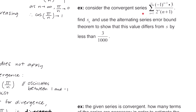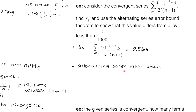This example says consider the convergent series negative 1 to the n minus 1 times 3, divided by 2 to the n times n plus 1. Find s sub 6, the 6th partial sum, and use the alternating series error bound theorem to show that this value differs from the total sum s by less than 3 over 1000. We plug in n equals 1 through 6 and add them all up using the calculator, getting approximately 0.565.